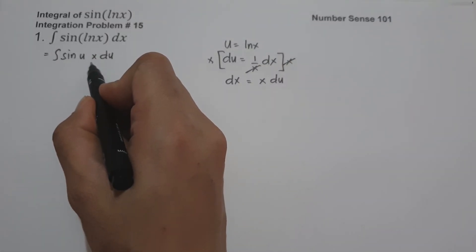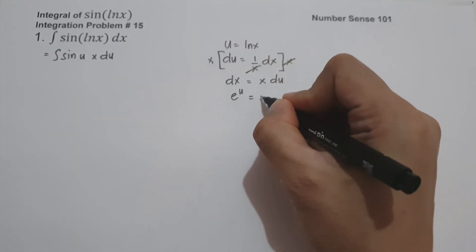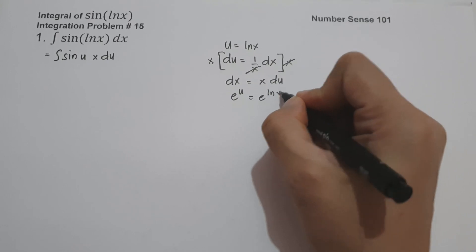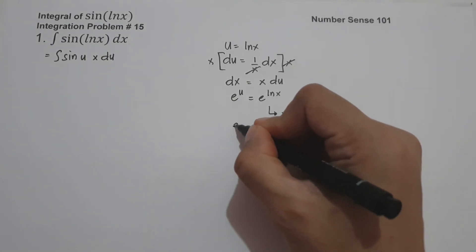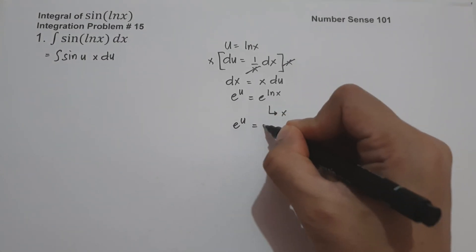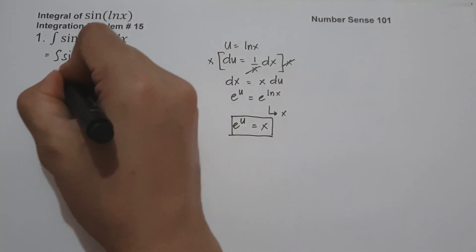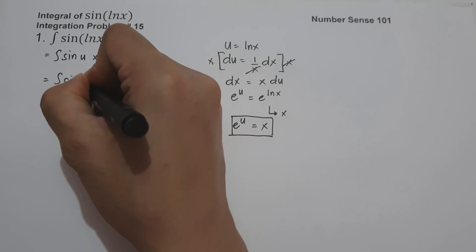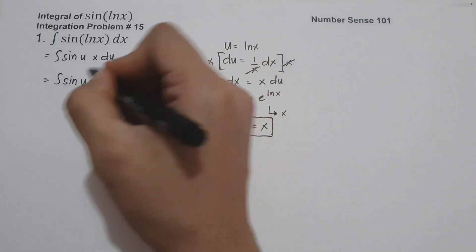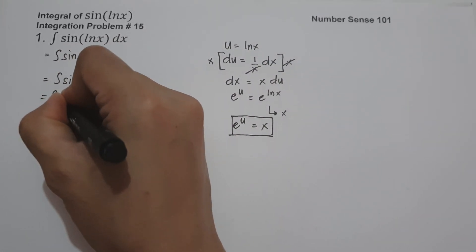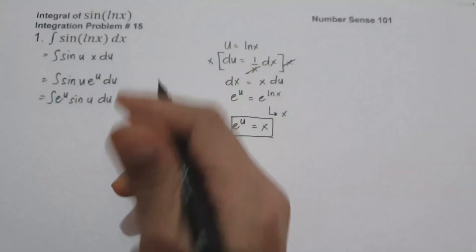Since we have x in our expression, we are going to eliminate it by noting that e raised to u equals e raised to ln x. Since e raised to ln x equals x, therefore e raised to u equals x. So we substitute x with e raised to u, giving us the anti-derivative of e raised to u times sin(u) du.